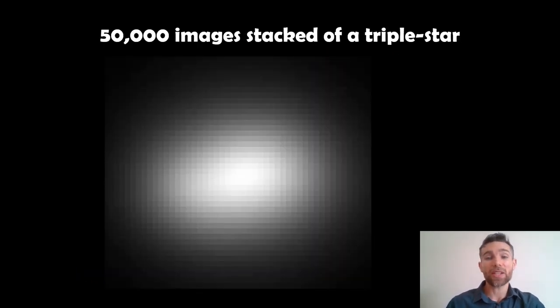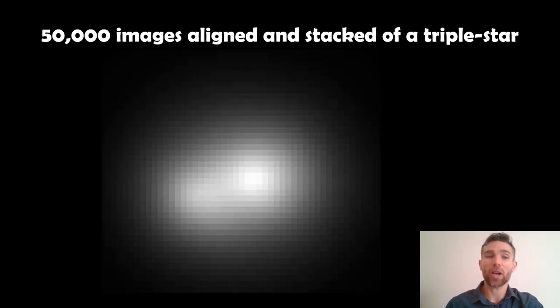So here is the triple star system. This is 50,000 images stacked. So there's no alignment occurred here. This is just averaging them all out. And again you can't see any structure there. It's all blurred, it's all averaged out. And you'd get something similar if you just did a very long exposure basically, because you're not aligning them at all. Now if you do speckle imaging where you've aligned them and you've stacked them, then it starts to get a little bit better. It's still not very good though. This is a triple star system and we can't pick out three stars.